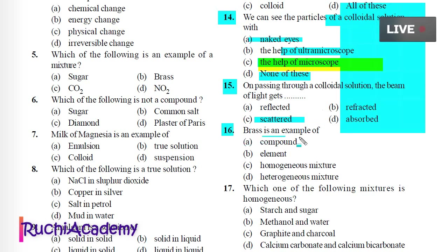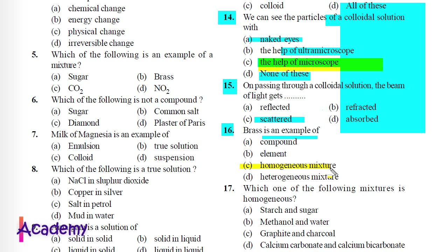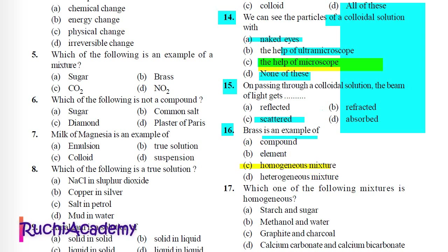Question 16: Brass is an example of: A) Compound, B) Element, C) Homogeneous mixture, D) Heterogeneous mixture. Correct answer is C) Homogeneous mixture, because brass is an alloy.